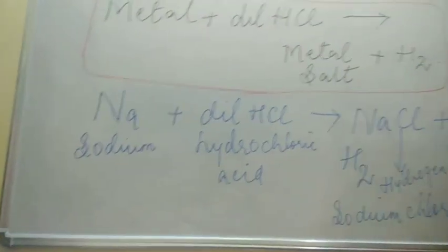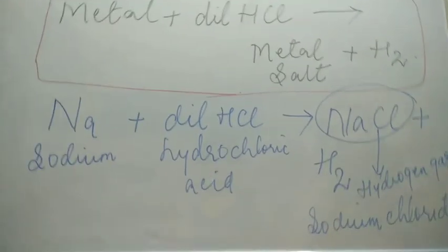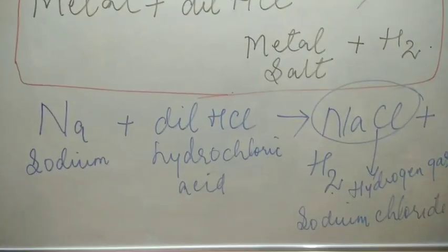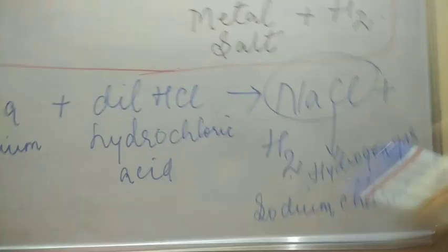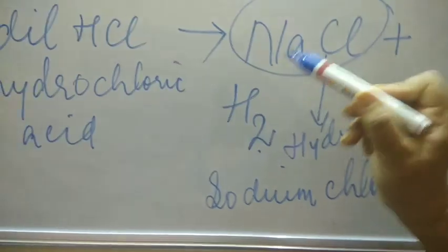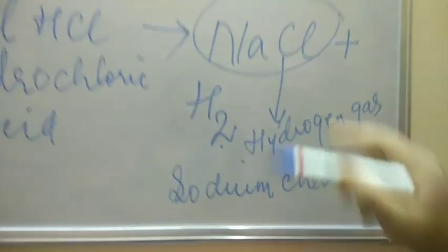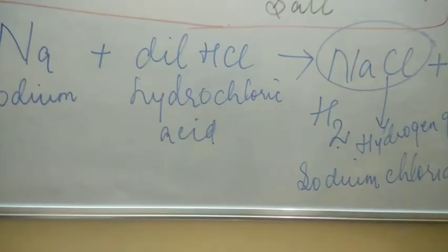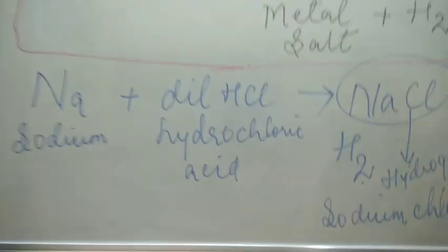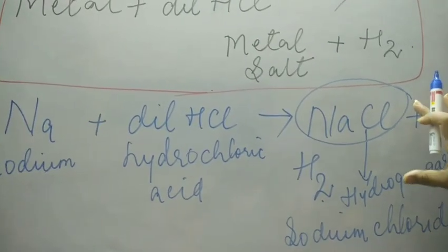So metal plus dilute acid gives you metal salt plus hydrogen gas. If you do this in the laboratory, to verify the hydrogen gas, you always remember: take the burning splinter near the mouth of the test tube, and if a pop sound comes, that confirms that hydrogen gas has been released.